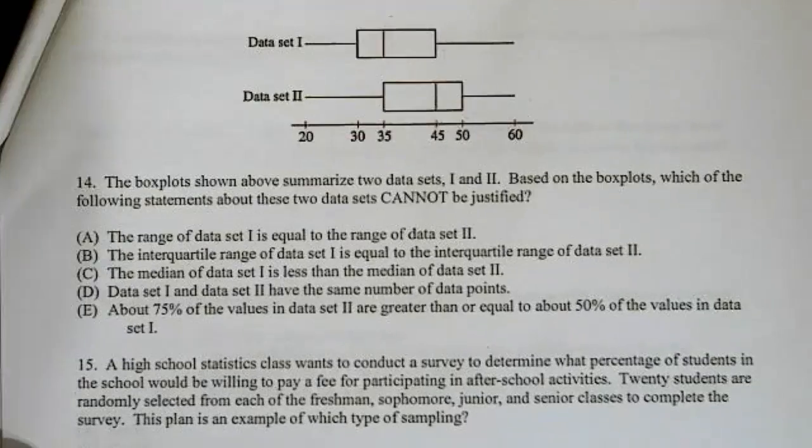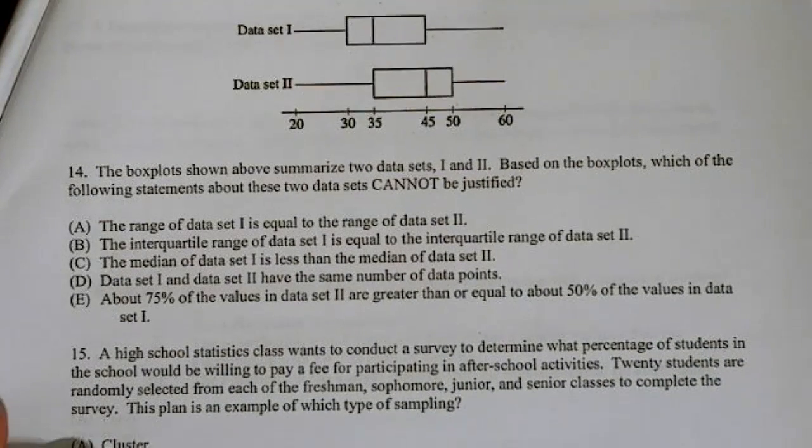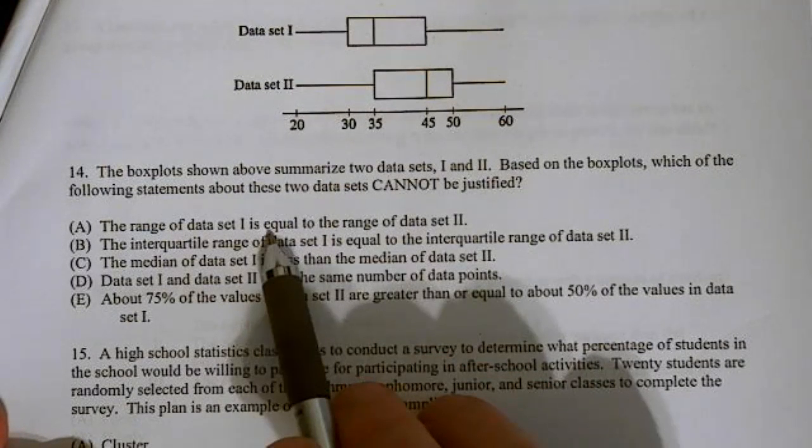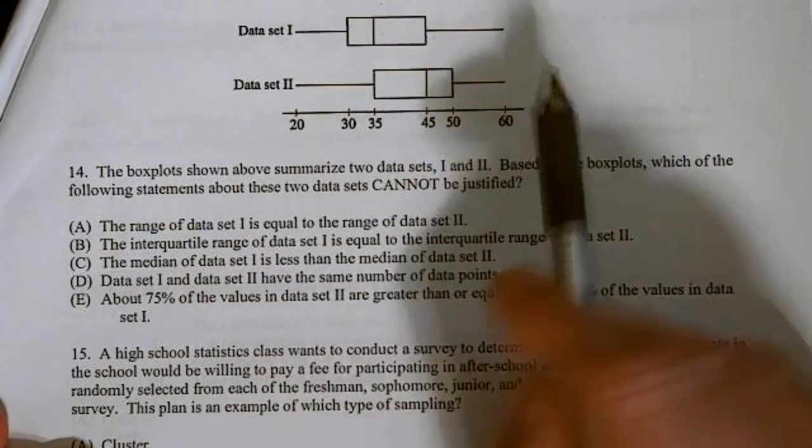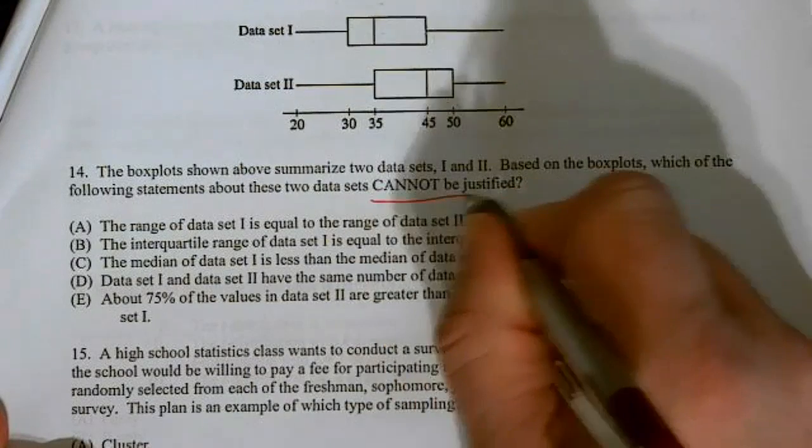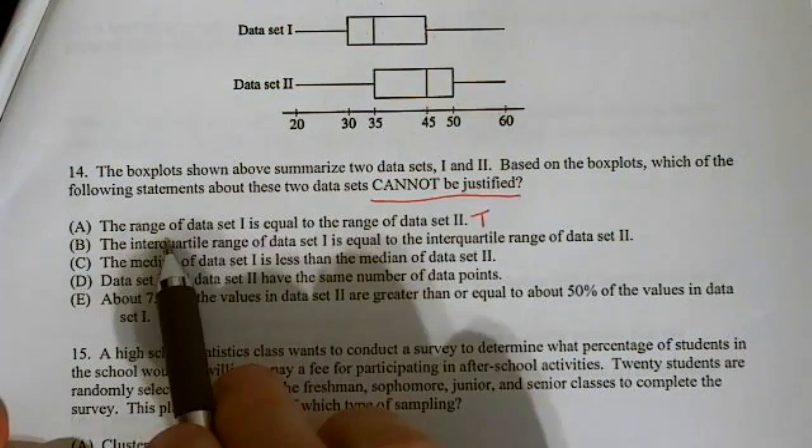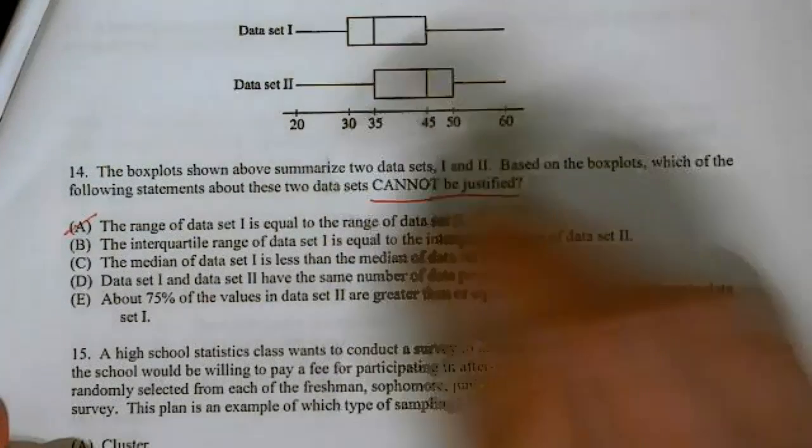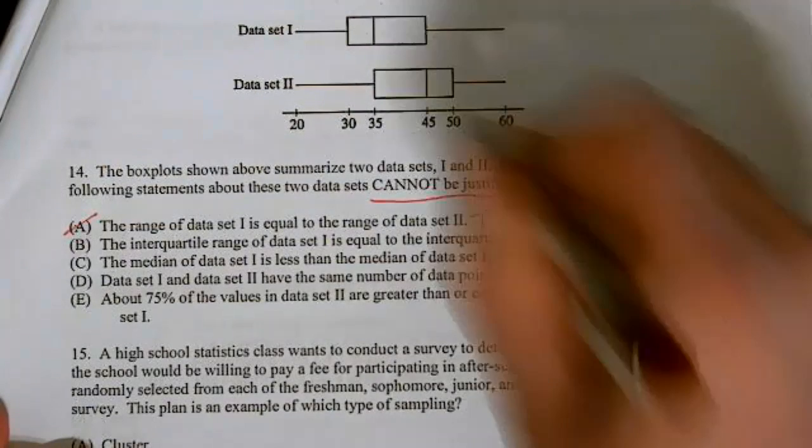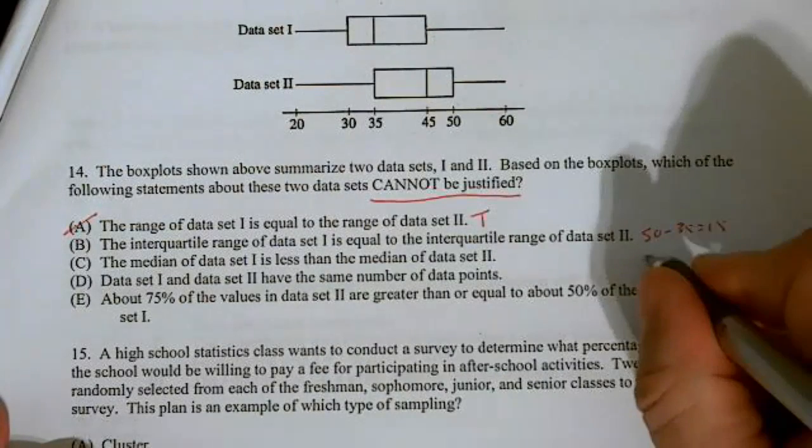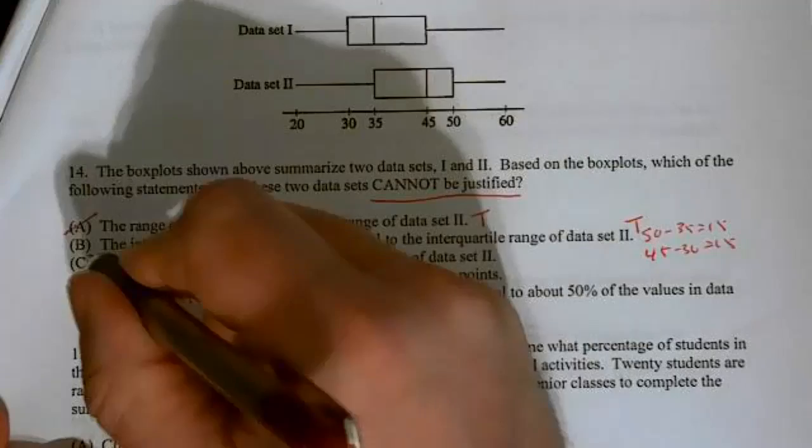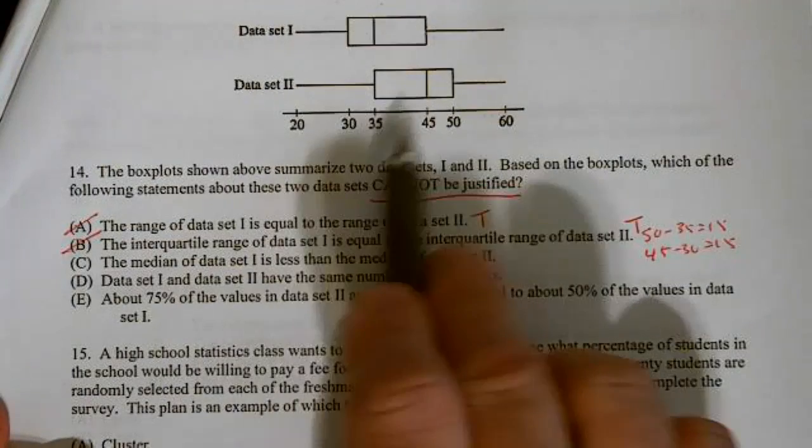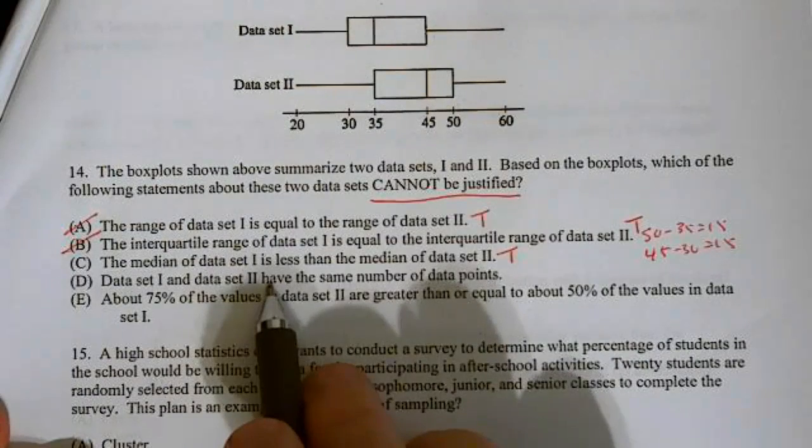Number 14, the box plots above summarize two data sets, one and two. Based on the box plots, which of the following statements about the two data sets cannot be justified? The range of data set one is equal to the range of data set two. Well, both start at 20 and end at 60. So, this is a true statement, and we're looking for cannot be justified. The interquartile range of data set one is equal to the interquartile range of set two. Well, the IQR 50 minus 35 is 15. So, this one has an IQR 15. This is 45 minus 30. So, it has an IQR 15. So, this is a true statement, and we're looking for false. The median of data set one is less than the median of data set two. Looks like 35 versus 45. So, that's true.